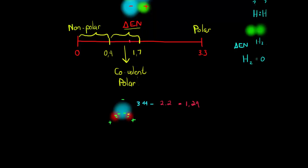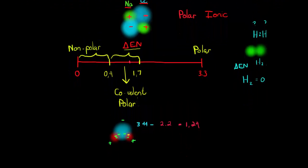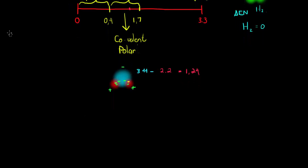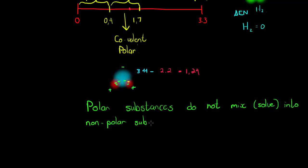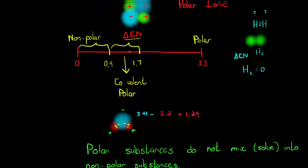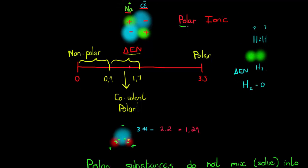Now what does this mean, what effect does it have to know whether something is polar or non-polar? Well, one thing is that polar substances do not mix or solve into non-polar substances. So for example, we know that if we put salt in water, that it will dissolve. Why does it dissolve? Because salt is a polar and water is a covalent polar.